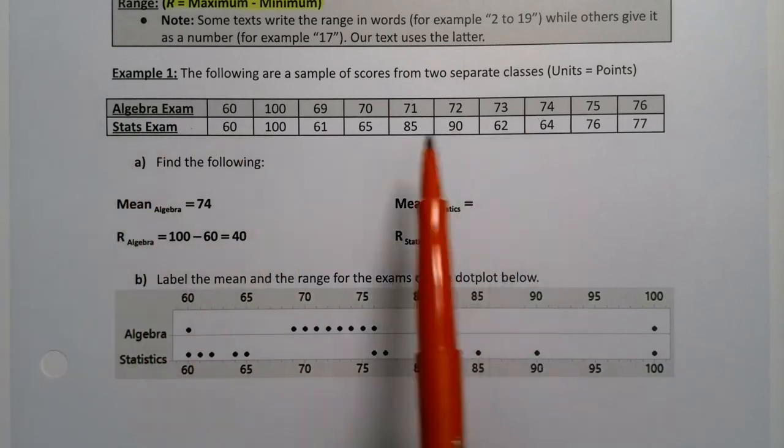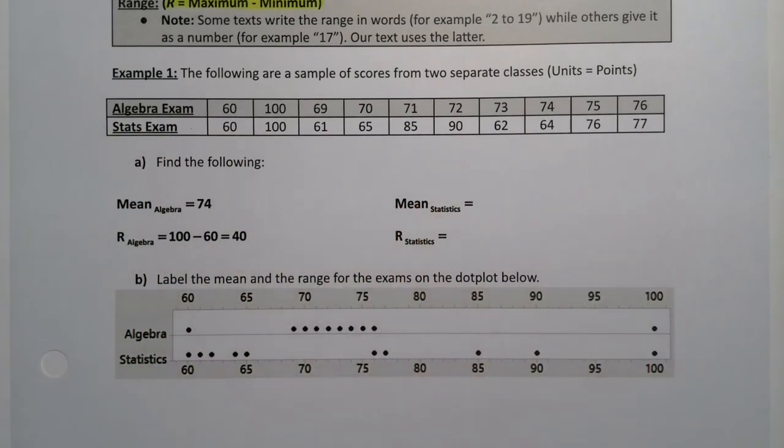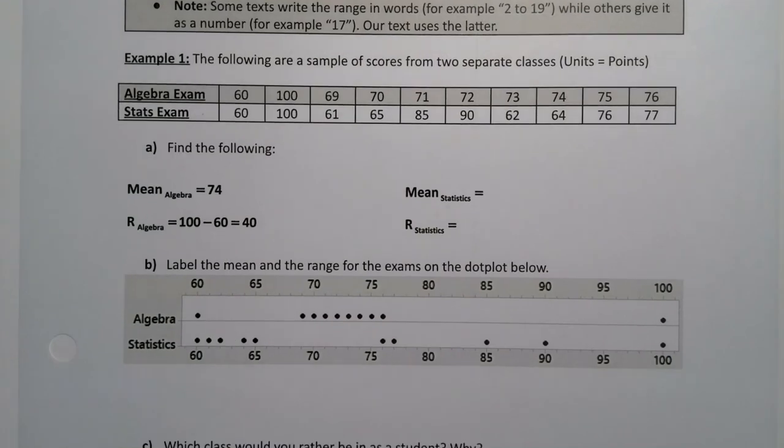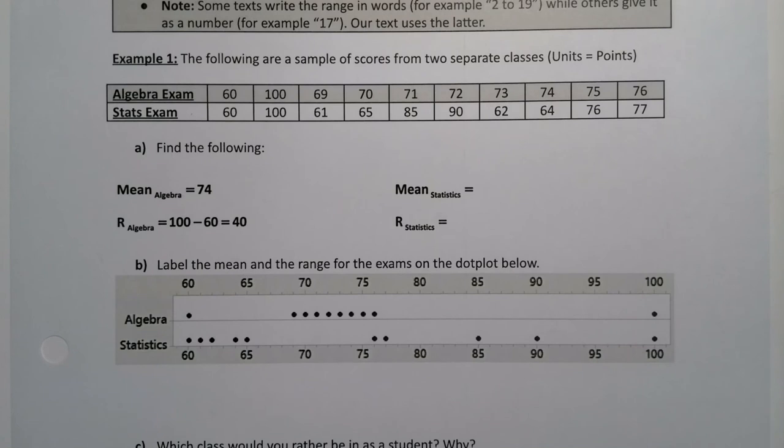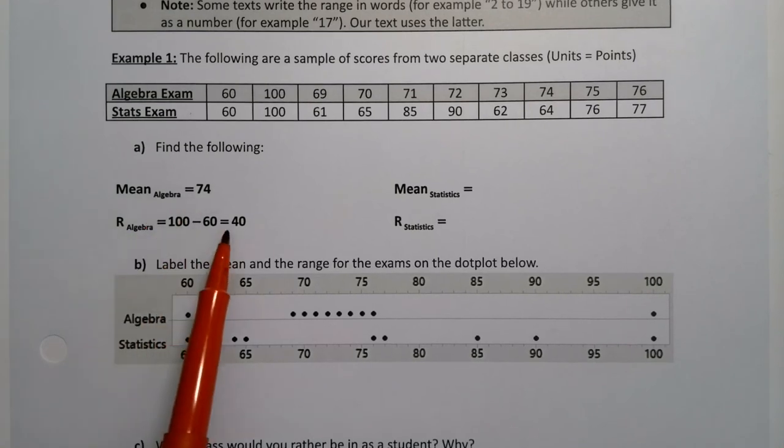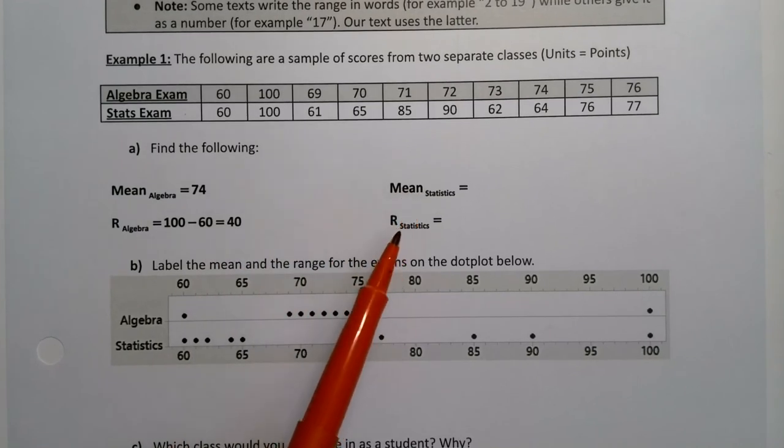There's an algebra exam and a stats exam. Now for both of these exams we're actually going to find the mean and the range. I've actually found the mean for the algebra right here. You can see the mean is 74 and the range is 40. But now we're going to do it for the stats exam.